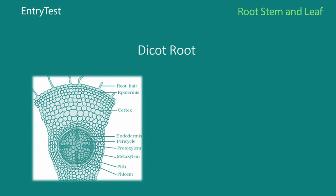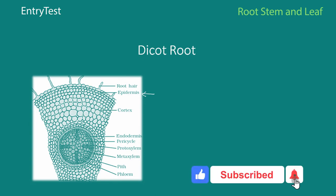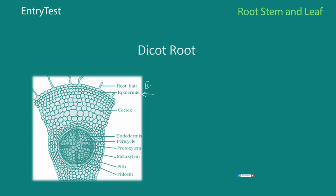Here is a diagram showing a transverse section of a dicot root — this particular one is for a sampline root. As you can see, the outermost layer of a dicot root is the epidermis. Sometimes certain cells in the epidermis can become elongated into root hairs, and remember, these root hairs are always unicellular, not multicellular.